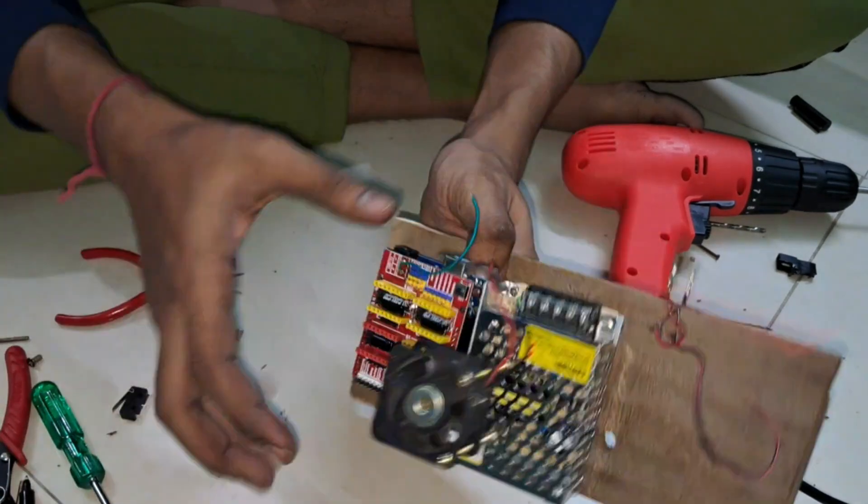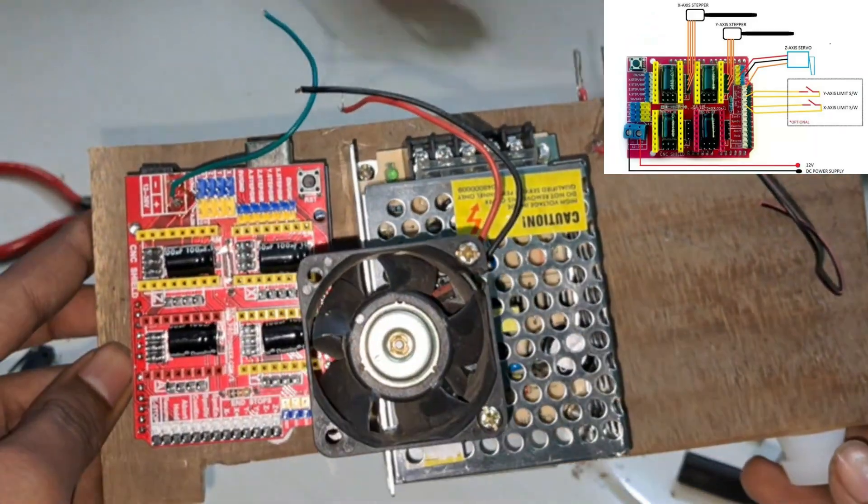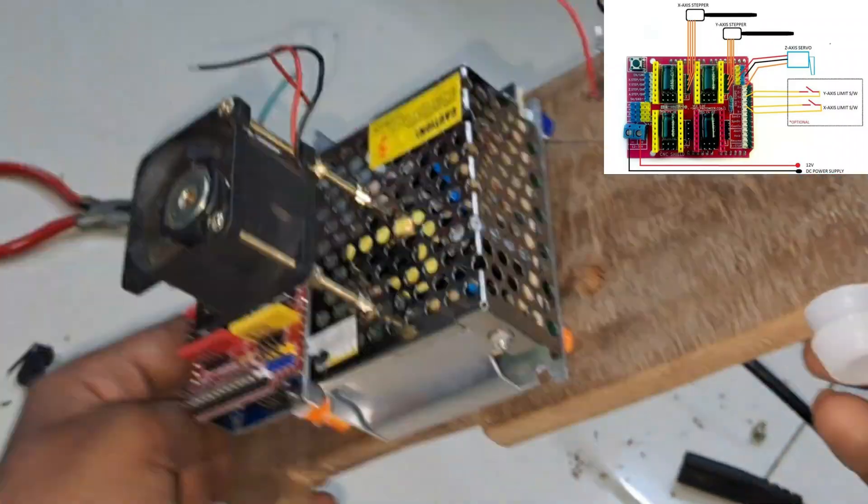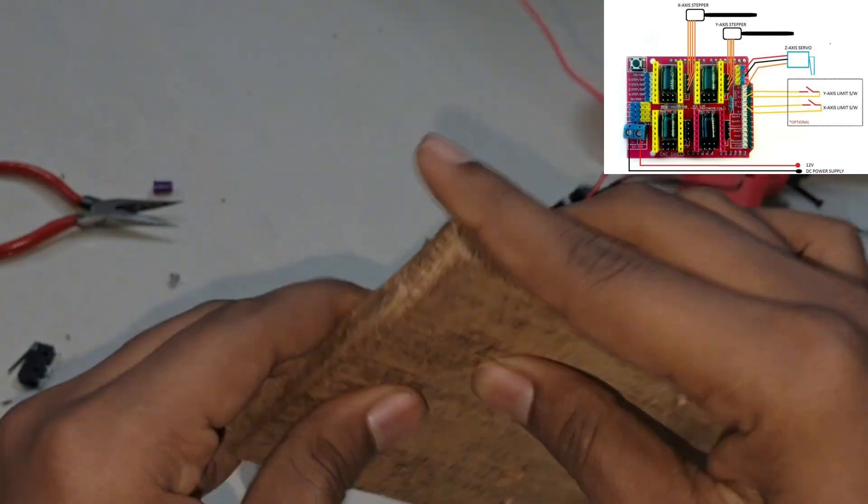Once everything is connected, we'll wire the motors to the shield. Make sure to connect each motor to the correct pins on the CNC shield for smooth movement in both the X and Y axis.